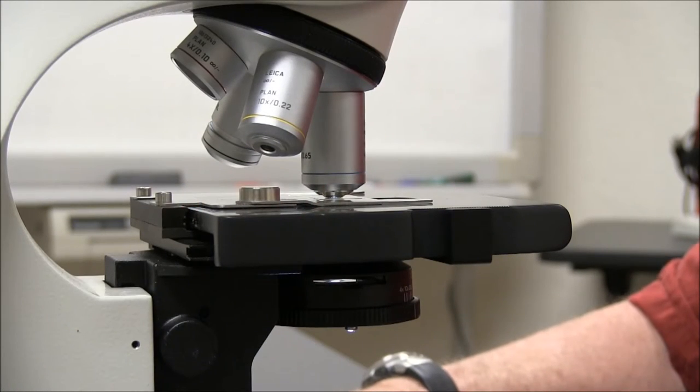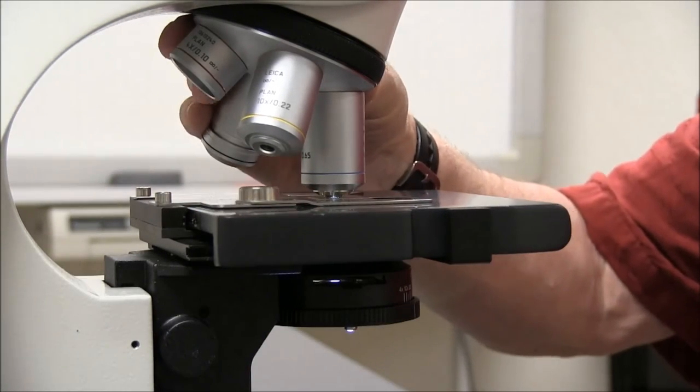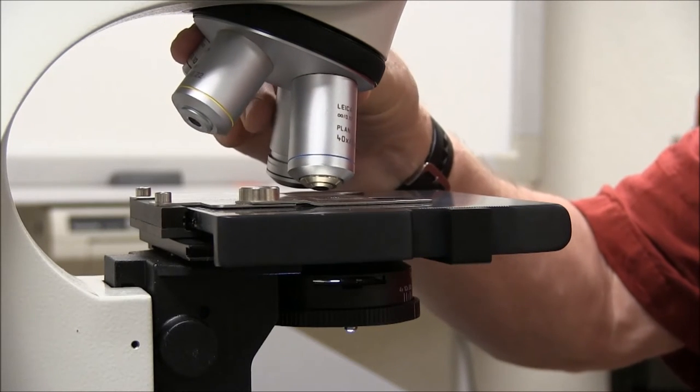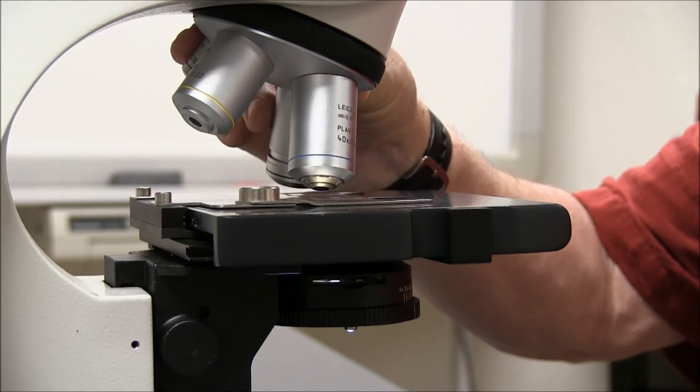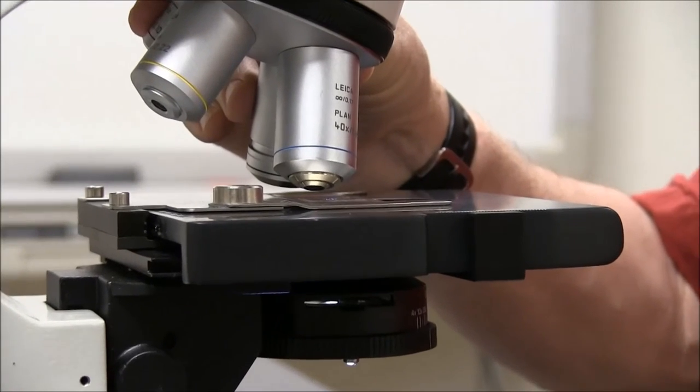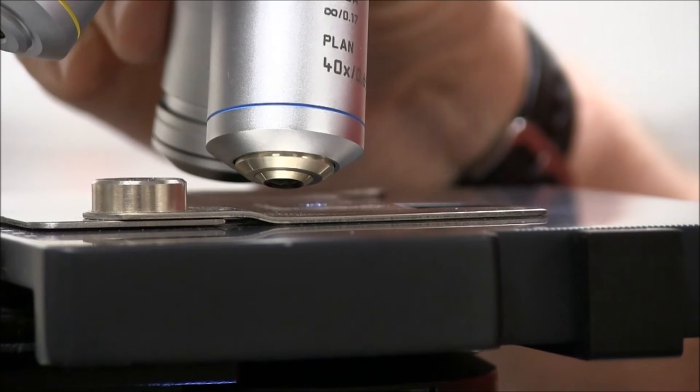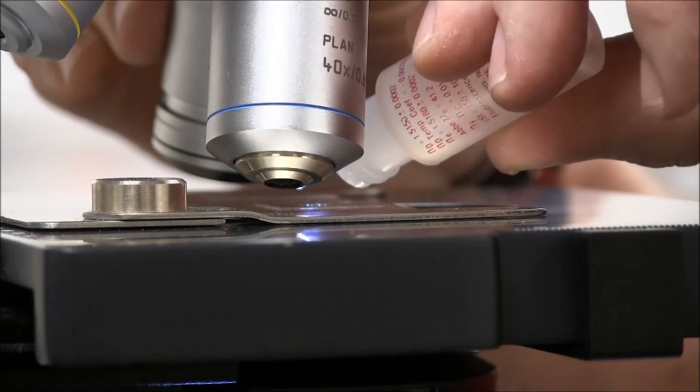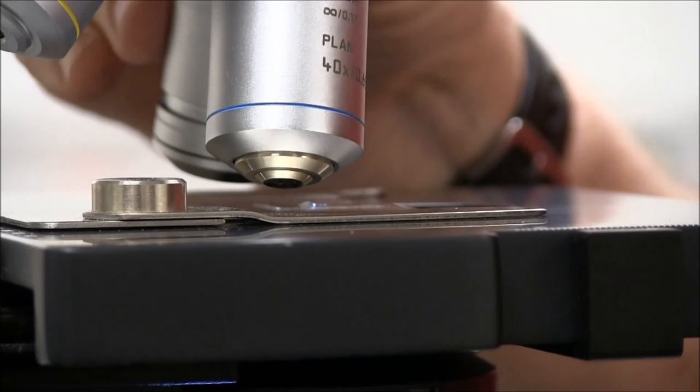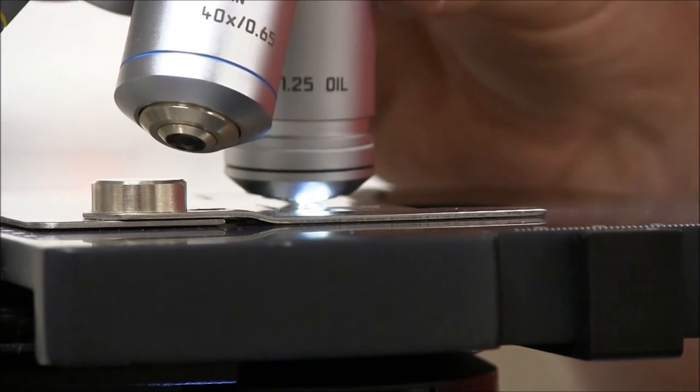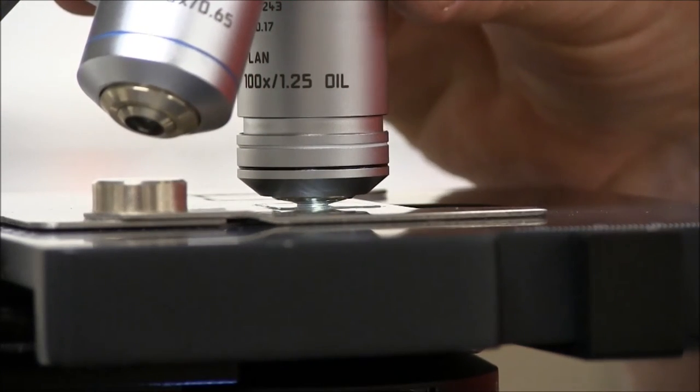When using the immersion oil objective, we need to move the 40x objective out of the way, move it to the side, so that we're halfway between the 40 and the 100x lens. I can now apply a drop of immersion oil to the slide, just one drop, and then turn the 100x objective into position.